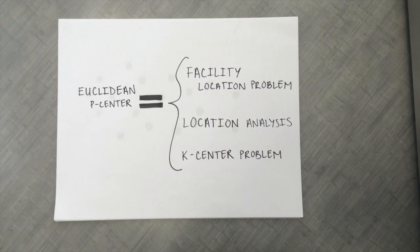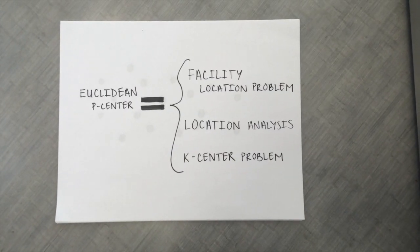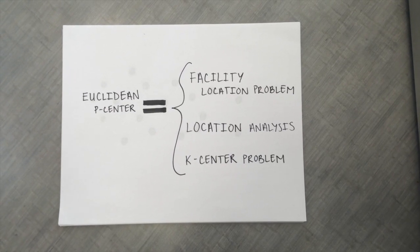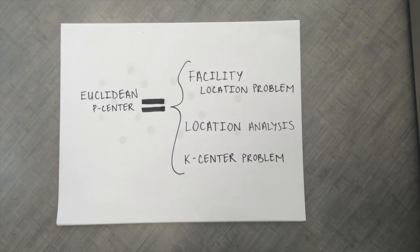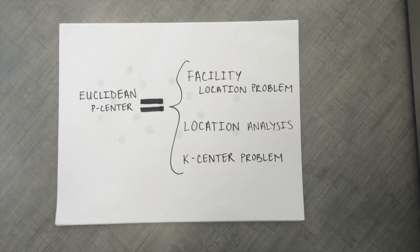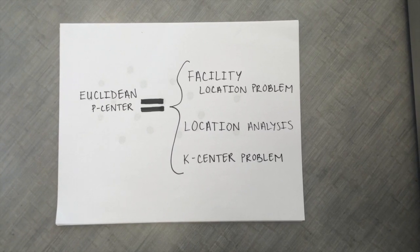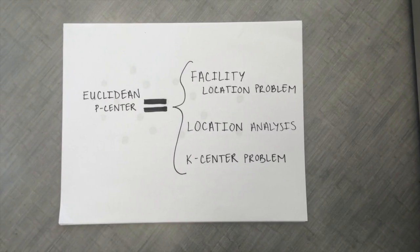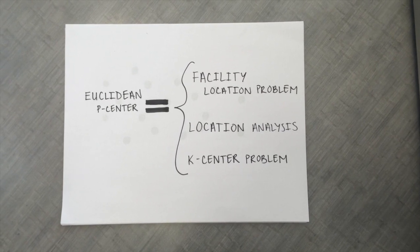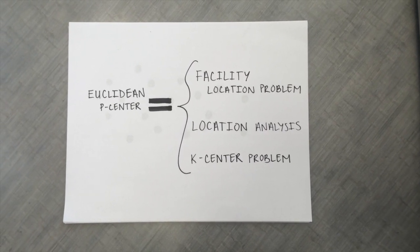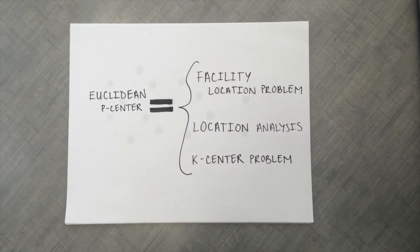The extension of our problem is also known as the facility location problem, location analysis, or k-center problem. The facility location problem imitates the placing of a facility or facilities, the centers, within its clients, the demand points. The facility location problem also considers other factors such as cost of building.